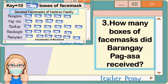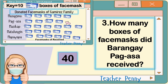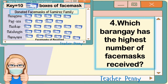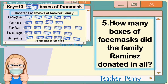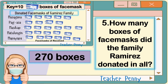Next question: how many boxes of face masks did Barangay Masagana receive? The answer is 40. For number 4: which barangay has the highest number of face masks received? The answer is Barangay Mapayapa. How many boxes did the Ramirez family donate in all? Count all the boxes and multiply by 10. The answer is 270 boxes.